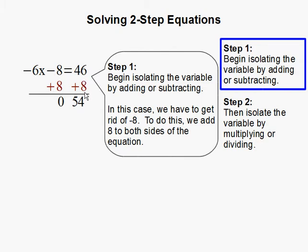And 46 add 8, that will get us 54. Then we should always rewrite our equation. So the resulting equation we have is negative 6x equals 54.